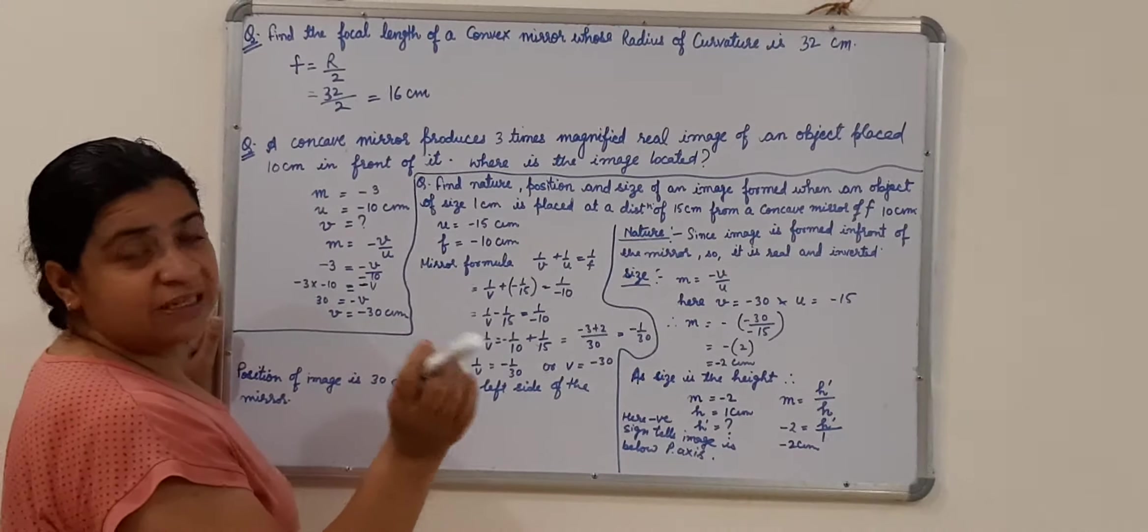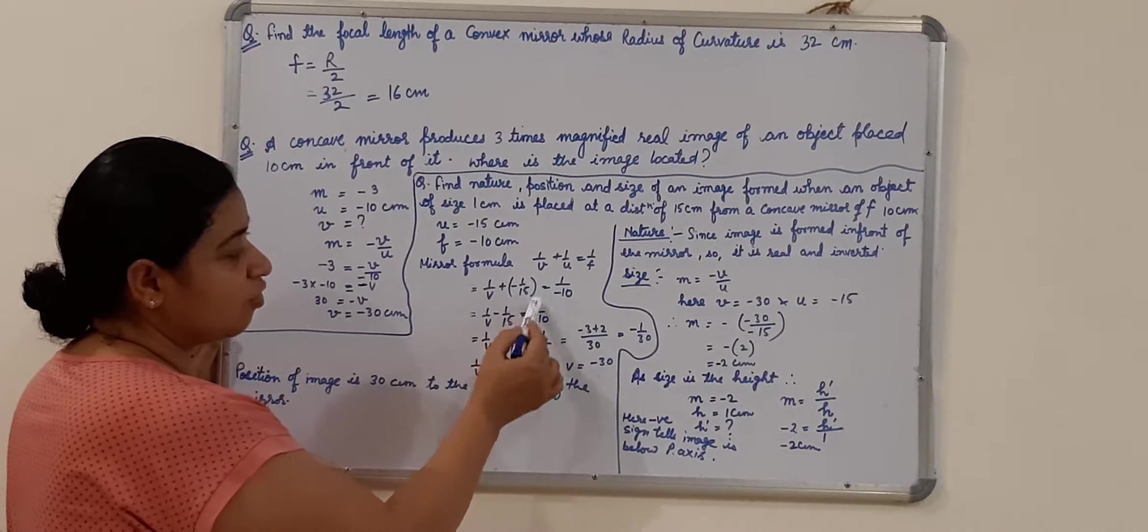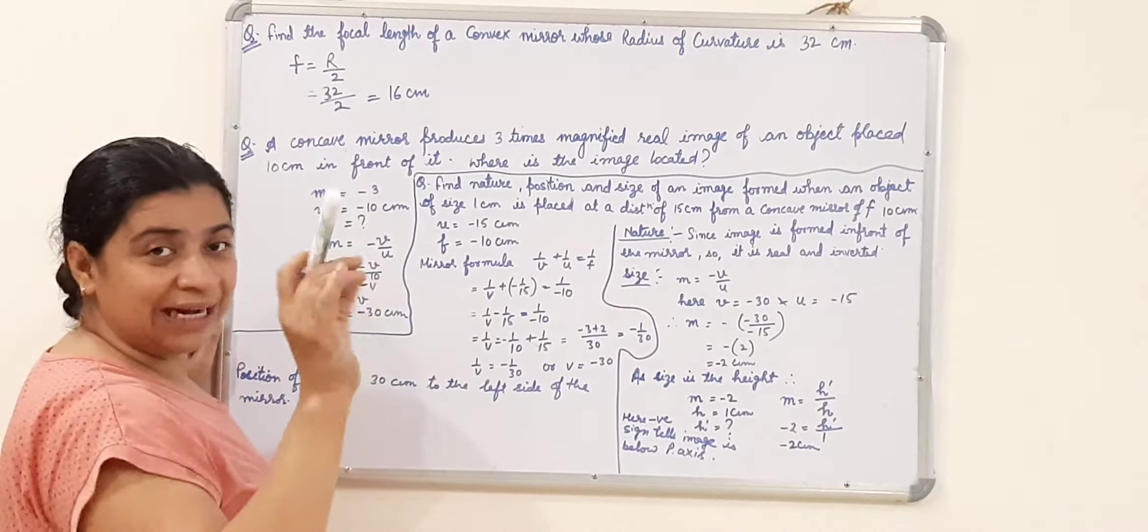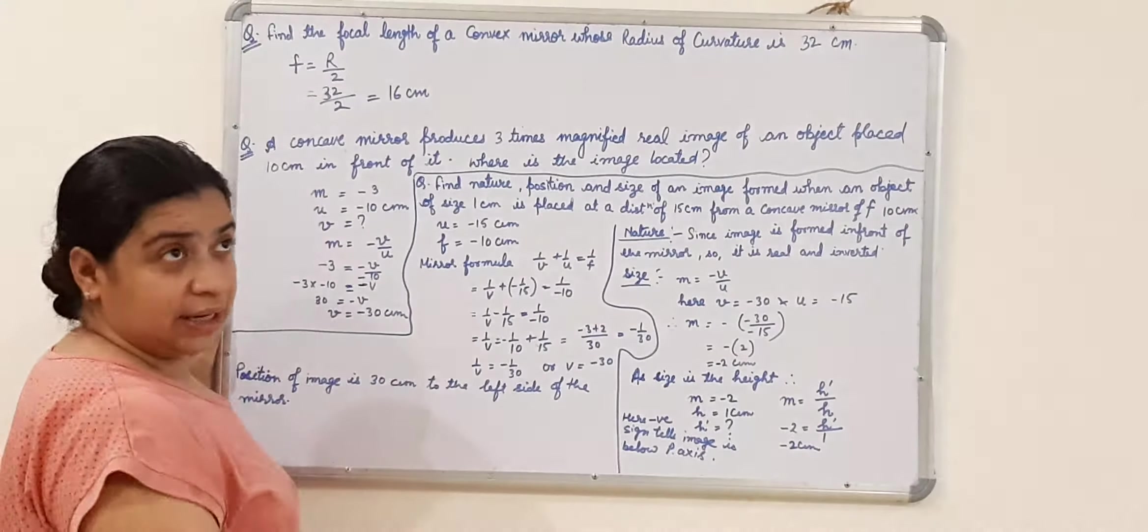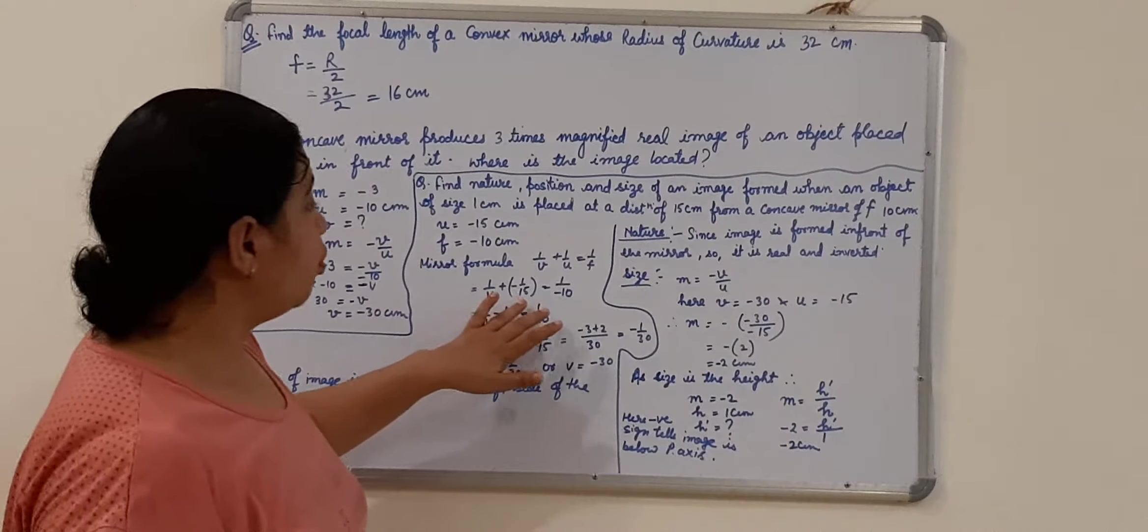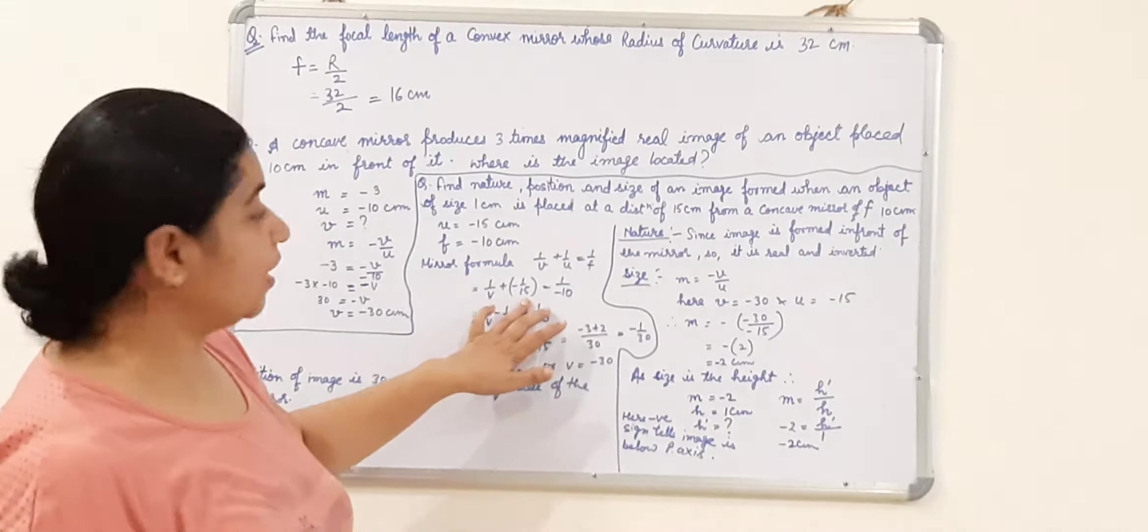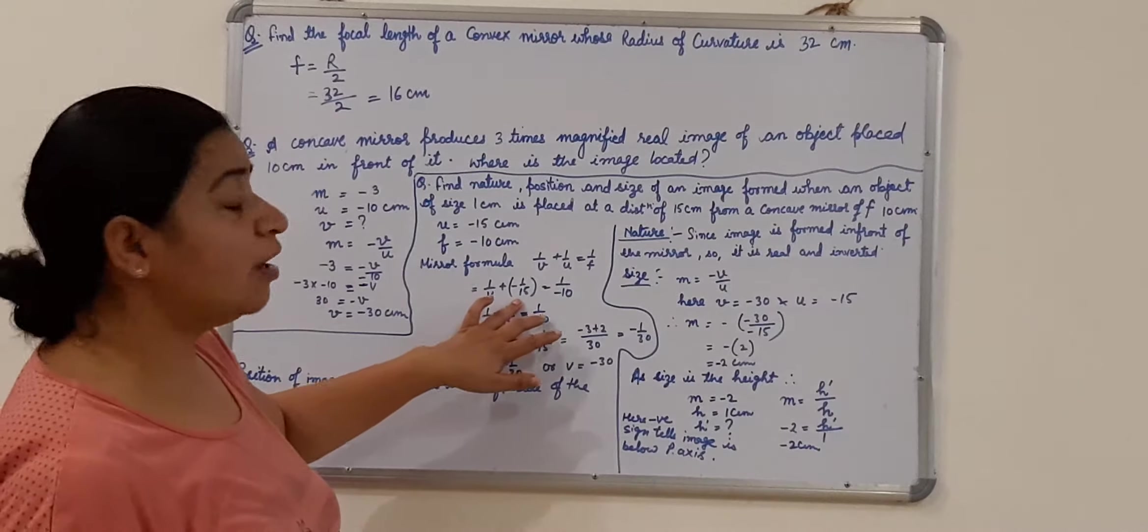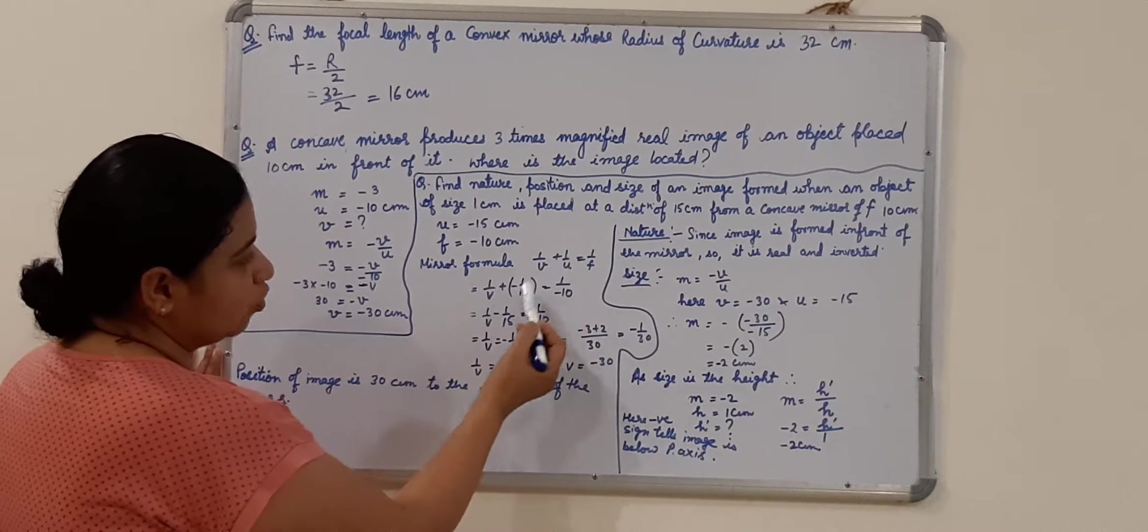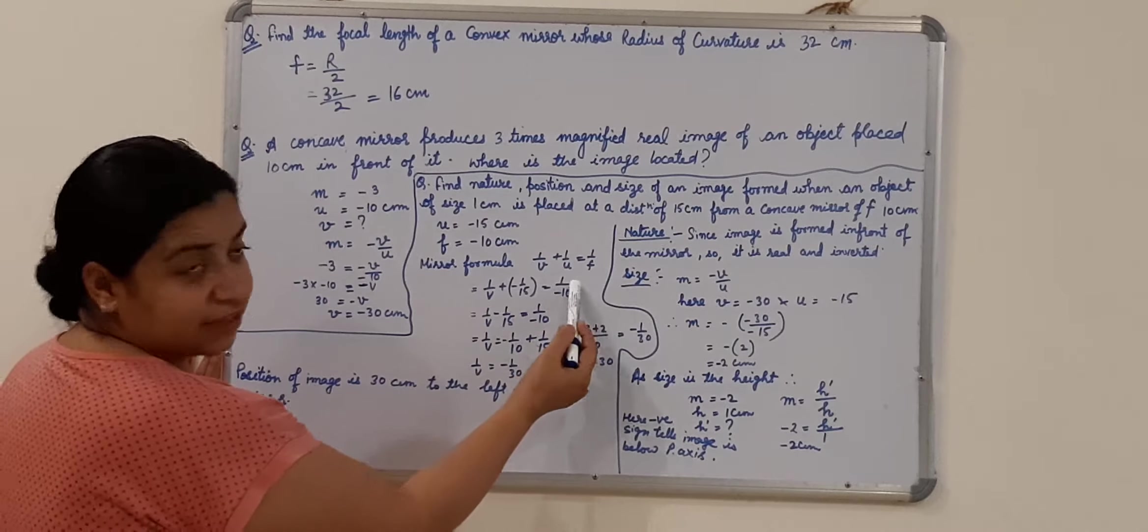Children, if you do not want to do any mistake in the numericals, first you put all the values in the formula properly. There is a plus and minus sign, so before solving, calculating it, put the bracket, before you put the values directly into the formula, put the values properly into the formula using brackets. 1 upon V plus 1 upon U. 1 upon U value is minus 15, is equals to 1 upon F, that is minus 10.